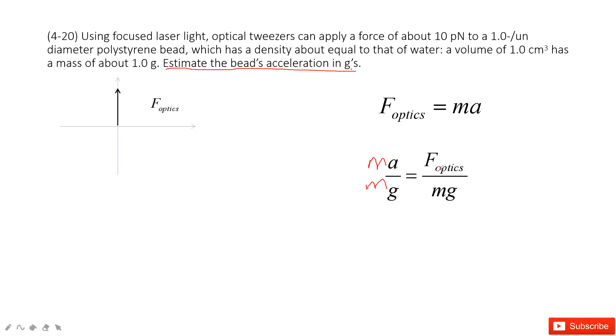And then we can say ma is the force from optics. This force is just because of the optics. And then this mg is just gravity. In this one, a divided by g just equals the force by optic divided by gravity.